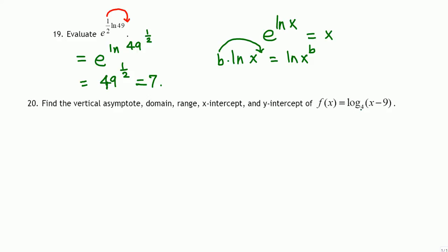Next, find the vertical asymptote, domain, range, x-intercept, and y-intercept of f(x) = log base 4 of (x − 9). Let's first look at the original graph of log base 4 of x. All log functions pass through 1, and the y-axis, x equals 0, is the vertical asymptote.